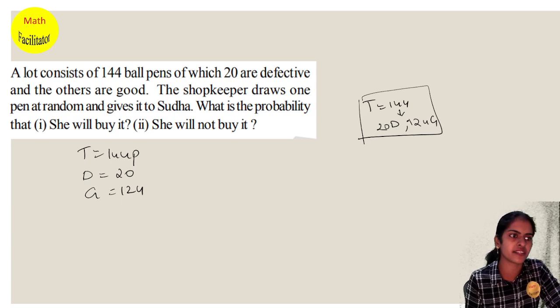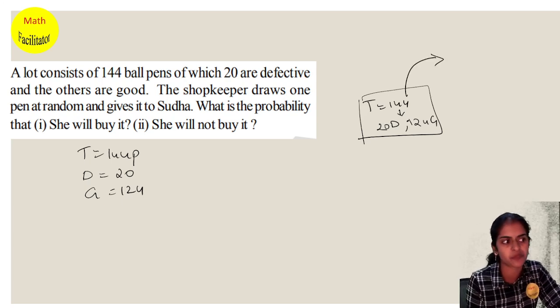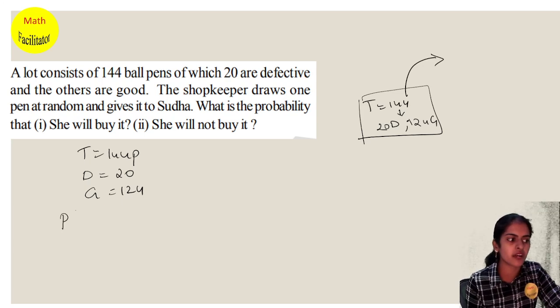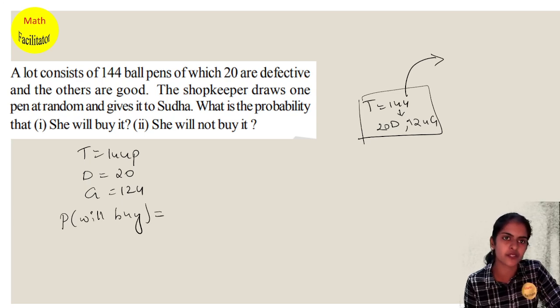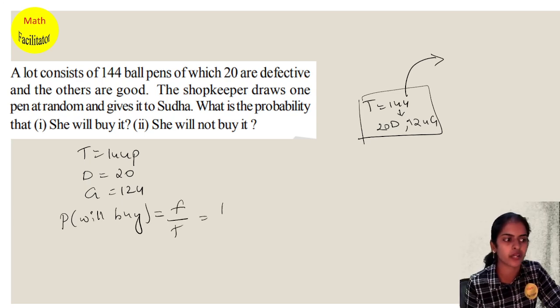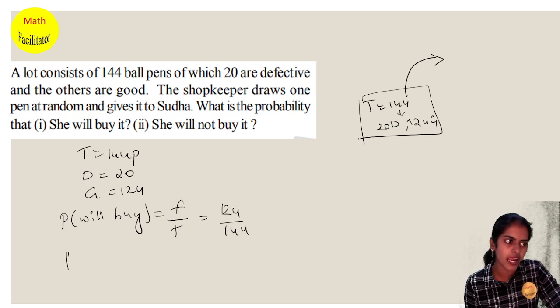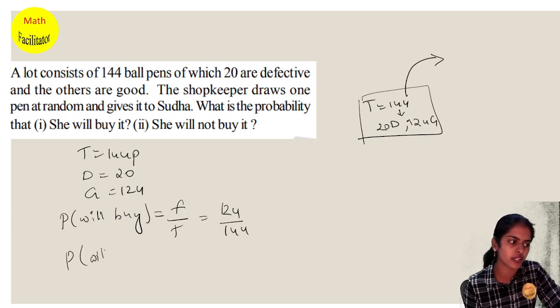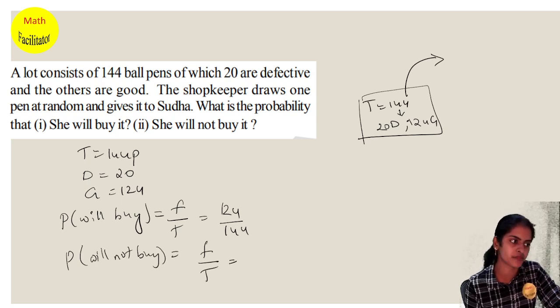The shopkeeper draws a pen at random and gives it to Sudha. What is the probability that she will buy it? She will buy only if the pen is good, so favorable outcomes are 124 good pens out of 144 total. She will not buy if it's defective, so the probability is 20 by 144, which you can simplify further.